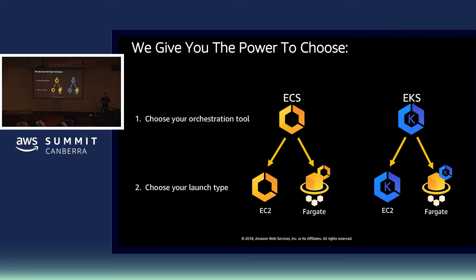we announced the availability of a service called Amazon Elastic Container Service for Kubernetes, which is a fully managed control plane for the open source Kubernetes container orchestration tool. Both of these services provide you with a mechanism to deploy and schedule your containerized applications across clusters or fleets of EC2 instances running within your own environments.